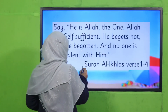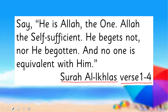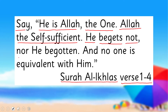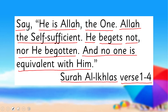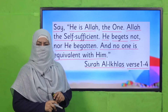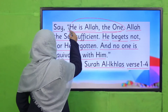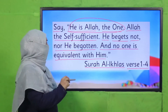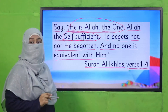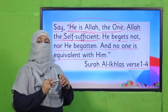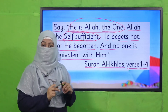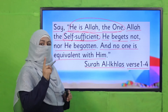Let's start with the name of Allah Subhanahu wa Ta'ala. Allah mentions in Quran, Surah Al-Ikhlas, verses 1 to 4: 'Say, He is Allah the One, Allah the Self-Sufficient. He begets not, nor is He begotten, and no one is equivalent with Him.' What does this beautiful surah tell us? It is a brief introduction of Allah. Allah is One — that is a fact, and He is Self-Sufficient — that is also a fact.